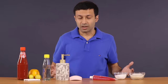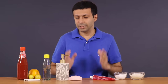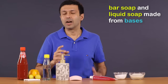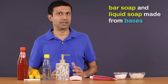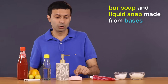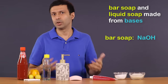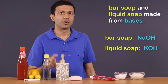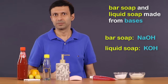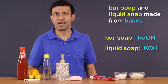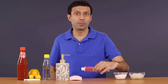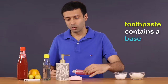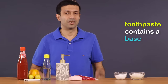Now let's take a look at what are the bases here. The soap and the liquid soap are made of bases. Bar soap is typically made from sodium hydroxide, and liquid soap typically contains potassium hydroxide. And did you know that your toothpaste also contains a base? So we are going to group all of these together.